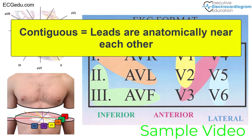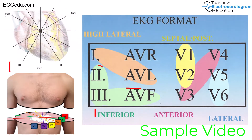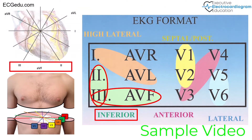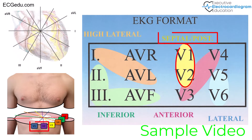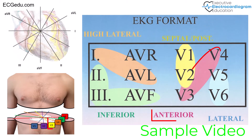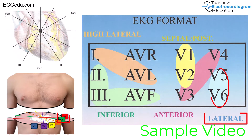Contiguous means that the leads are anatomically near each other. For example, leads 2, 3, and AVF represent the inferior wall. Leads V1 and V2 represent the septum and posterior walls. Leads V3 and V4 represent the anterior wall. Leads V5 and V6 represent the lateral wall.